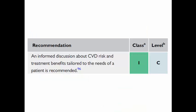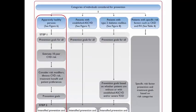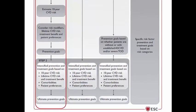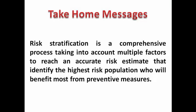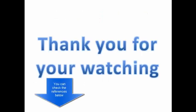After the risk estimation process, there should be an informed discussion with the patient about cardiovascular risk and treatment benefits, tailored to their needs — this is a Class I recommendation. In summary, we have spoken about apparently healthy people, prevention goals for all, 10-year risk estimation considering risk modifiers, lifetime risk especially in younger persons, treatment benefits, and patient preference, followed by step 2: intensified prevention and treatment goals. The take-home message is that risk stratification is a comprehensive process accounting for multiple factors beyond a single number, in order to identify the highest-risk groups who will benefit from preventive measures. In the next video, we will cover risk stratification in patients with established cardiovascular disease.